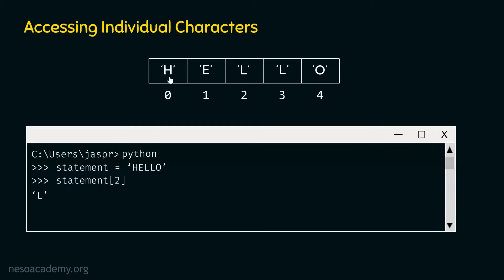Internally, this is how a string is represented in Python. Each character is assigned a unique number, which is called an index of that character. With the help of that index, we can access that character. In this way, we can access individual characters of a string.